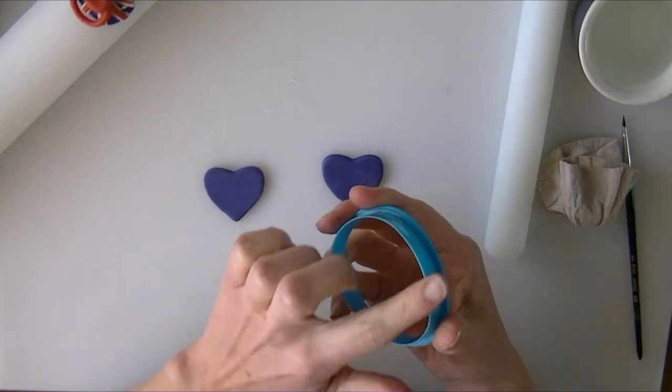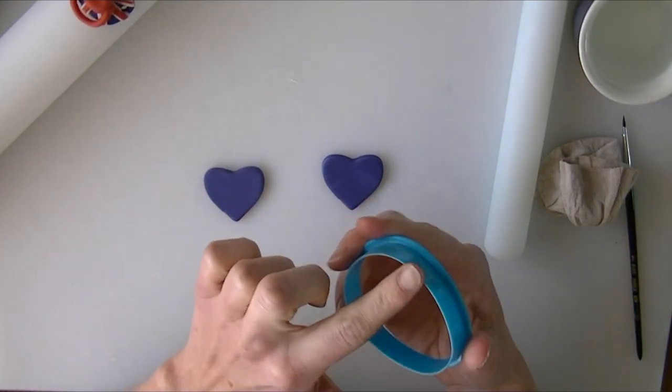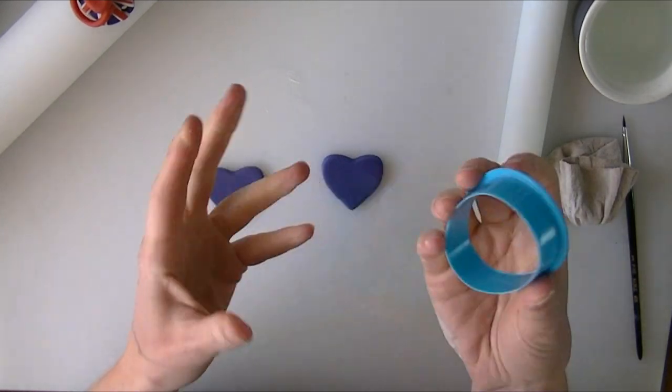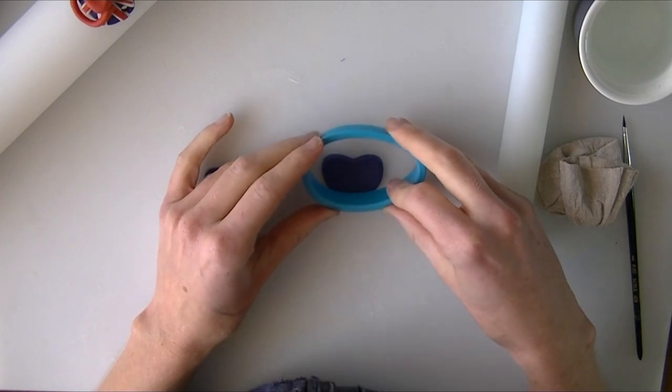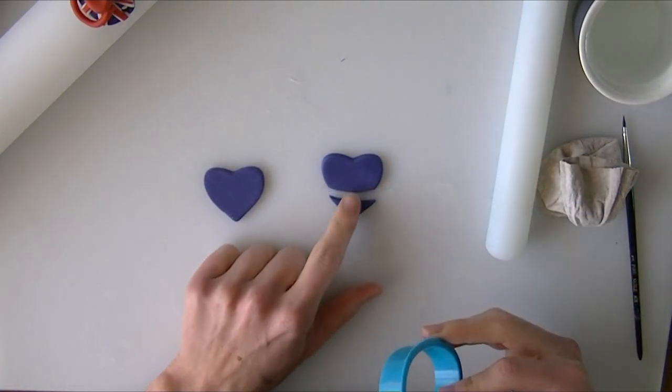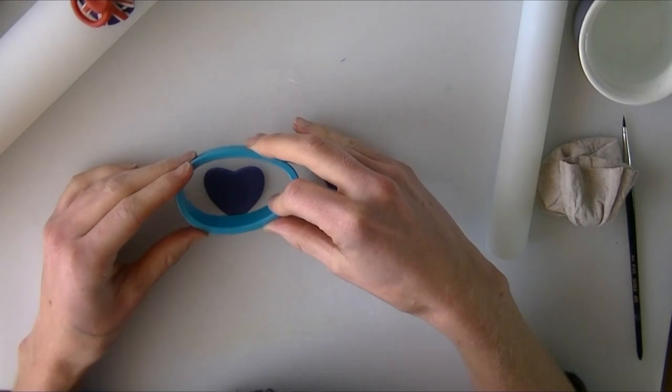Now you need something that has a rounded or a curved edge on it. A circle cutter is fine. I just came across the Easter egg shaped one first so I'm going to use this. I'm just going to cut off the bottom triangle of each of my hearts.